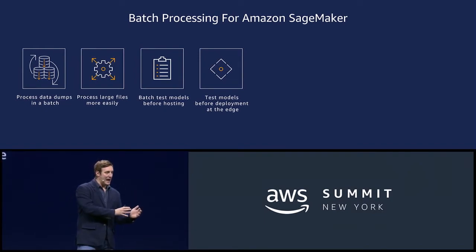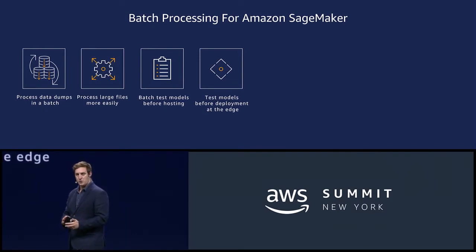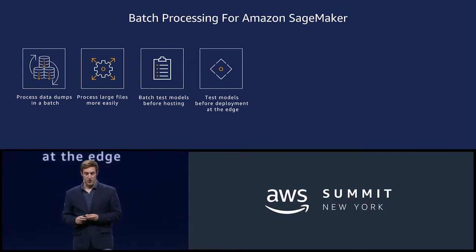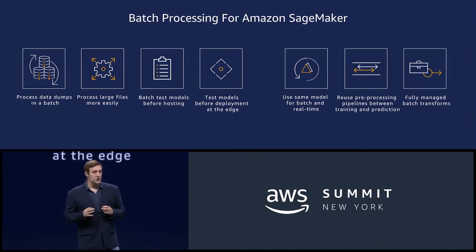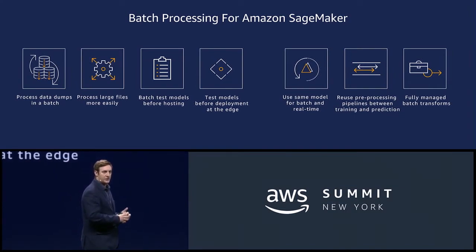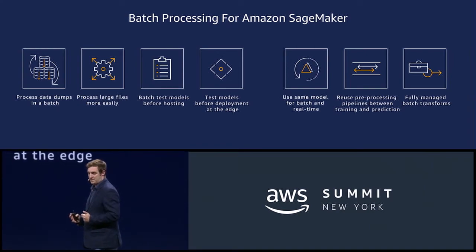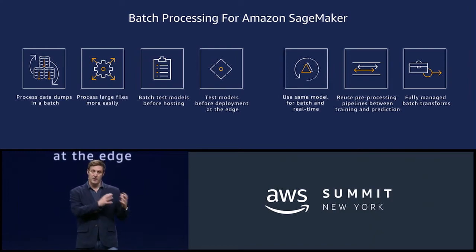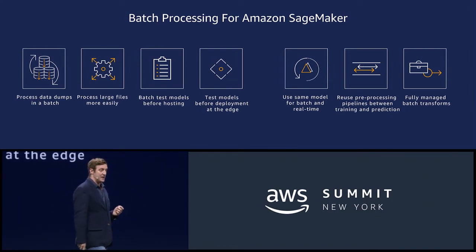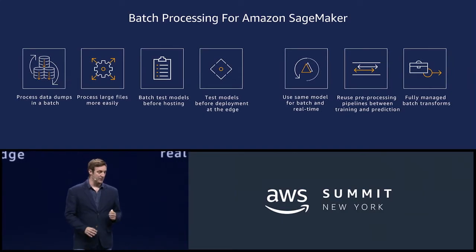This works whether you're running in the cloud or deploying models to the edge — say, to an MRI machine in a hospital. You can use the exact same models you're training in SageMaker today for real-time predictions and run those exact same models for batch predictions. You can also bring all of the pre-processing and post-processing steps into your batch processing workloads. And again, this is all fully managed — if you've ever run a training job in SageMaker, this is virtually the same API.